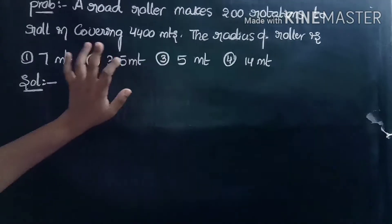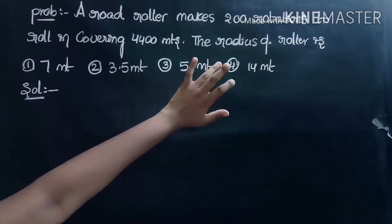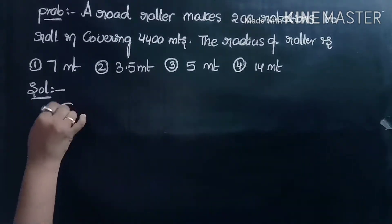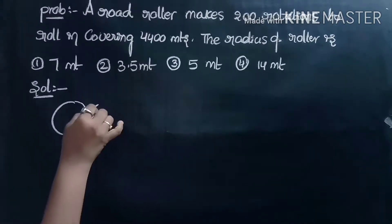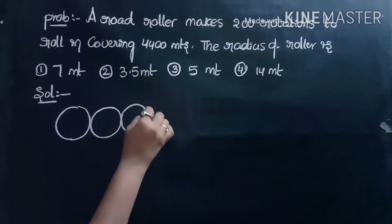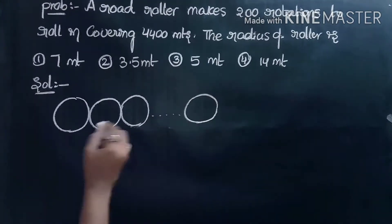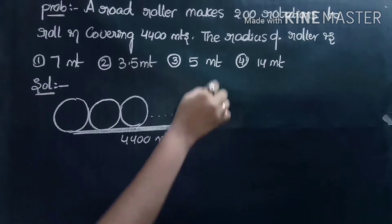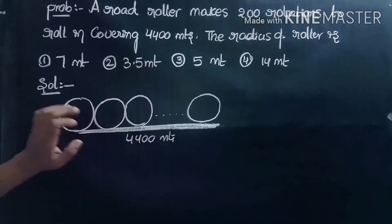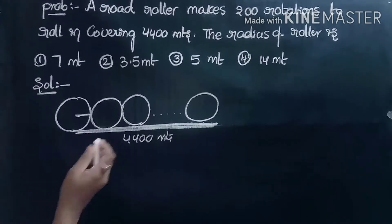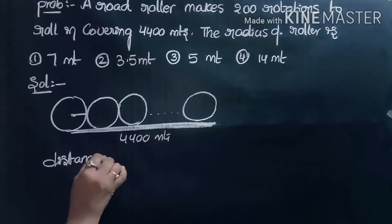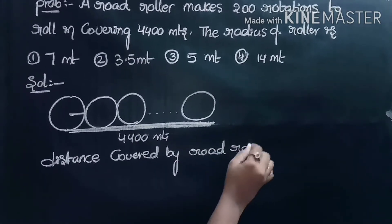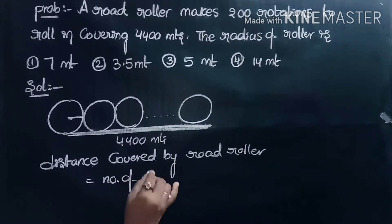Fourth problem. A road roller makes 200 rotations covering a distance of 4400 meters. Find the radius of the roller. Suppose this is the road roller making 200 rotations to cover 4400 meters. The formula: distance covered by the road roller equals number of rotations into 2πr.